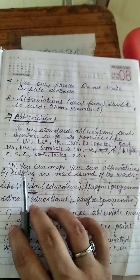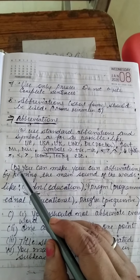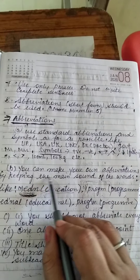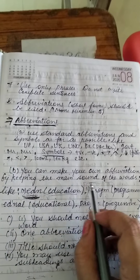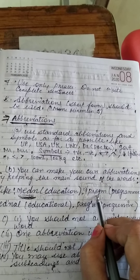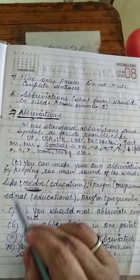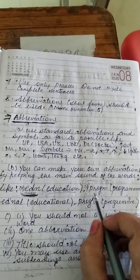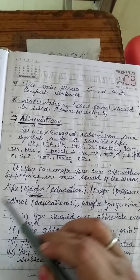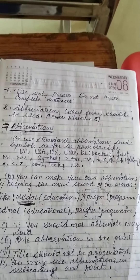You can make your own abbreviations by keeping the main sound of the words. For example, if the word is 'education,' the abbreviation will be EDN. If the word is 'program,' it will be PROGM. If 'educational,' then ED'NAL. If 'progressive,' then PROG'VE. You have to keep the main sound of the word.